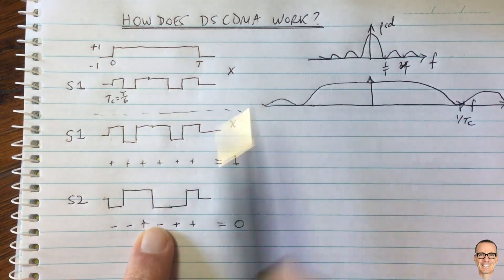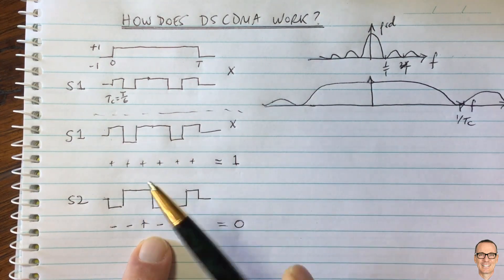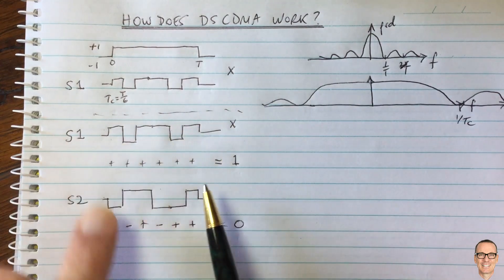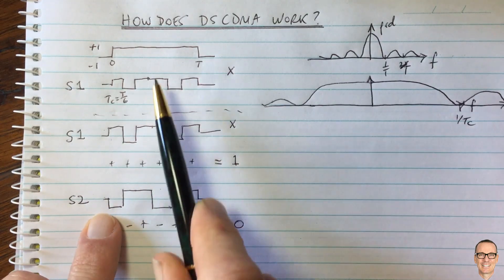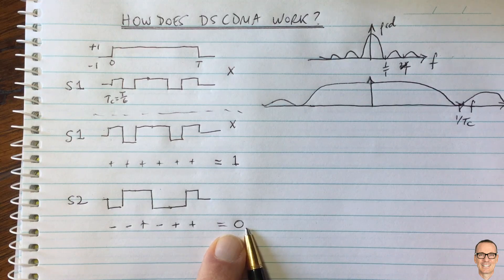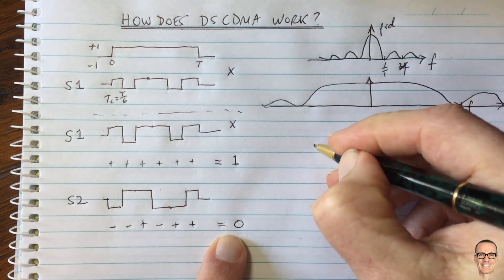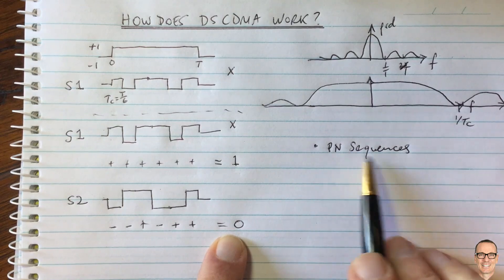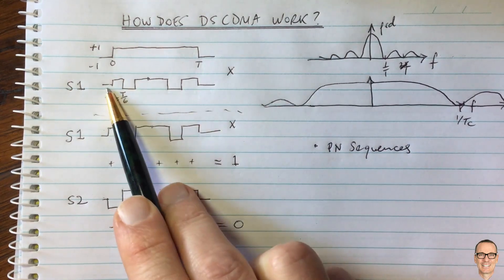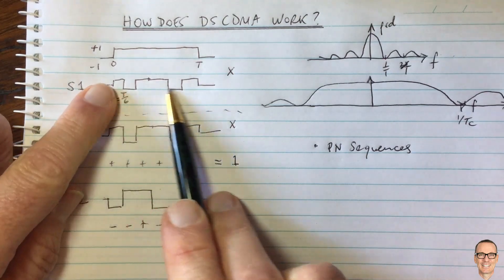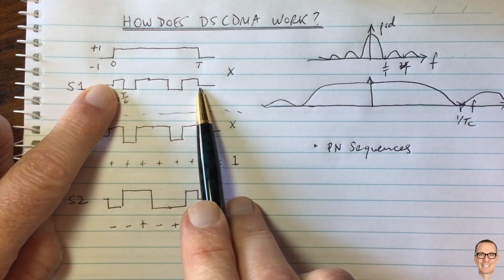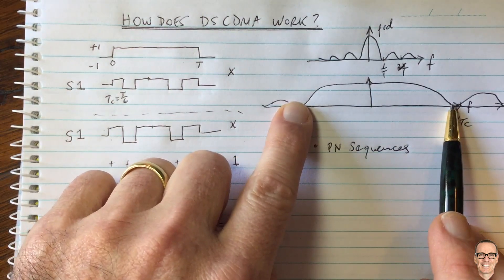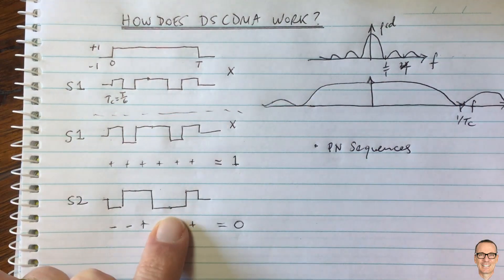So what do we need to make this work? First, you need to know what your sequence is at both the transmitter and the receiver. For it to work perfectly, the sequences of all different users need to be orthogonal. We often use pseudo-noise sequences for different users so that the sequences are randomly generated. I've only shown six chips here, but in general we use much longer sequences, especially if we want more users in the system. The more chips you have, the shorter each chip is, the more bandwidth is used, but the more users can be in the system because more orthogonal codes are available.